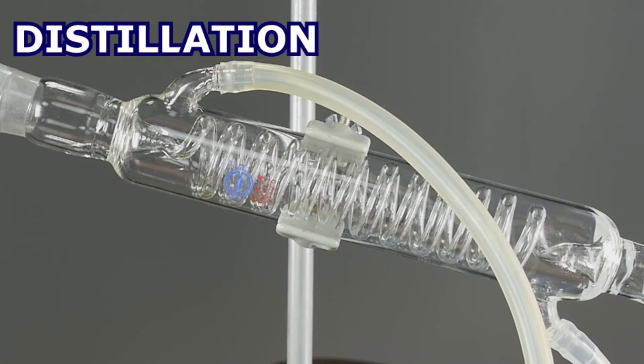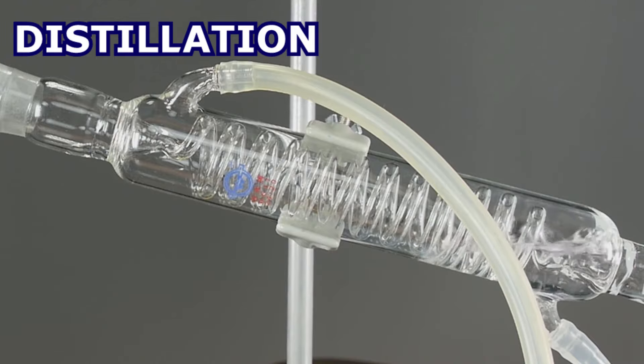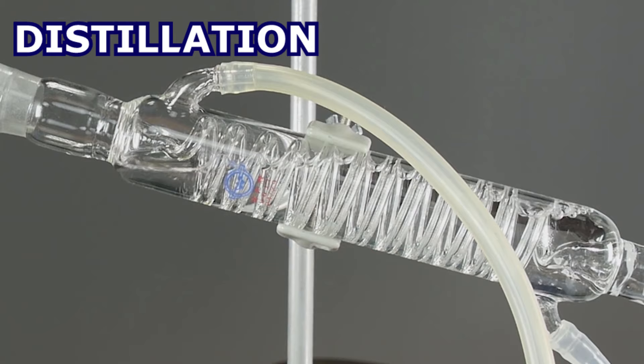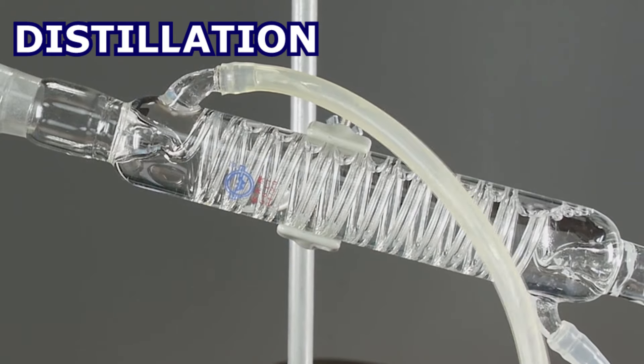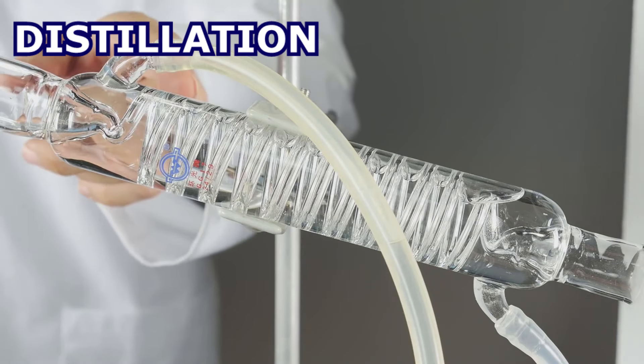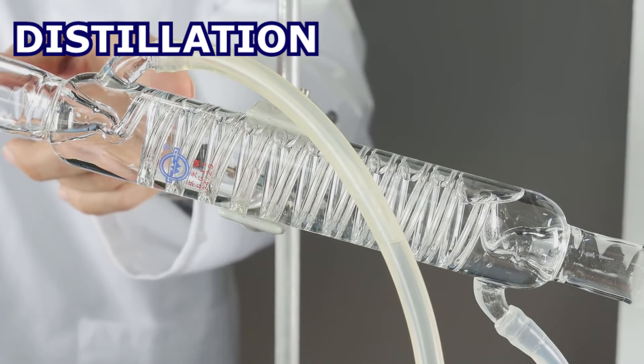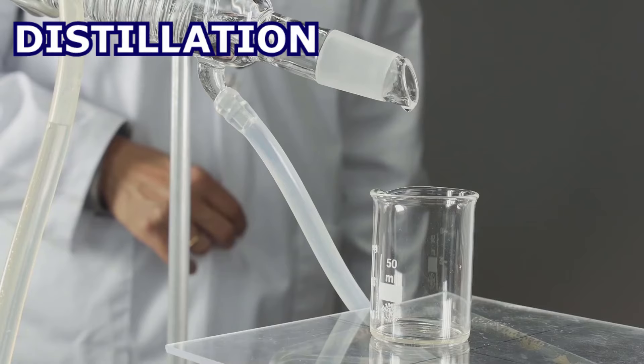This big tube here is filled with cold water. When the gaseous alcohol goes through the spiral tube, which is inside, it will be cooled down and returned to its liquid state.